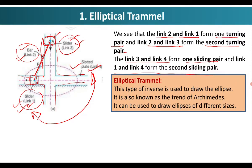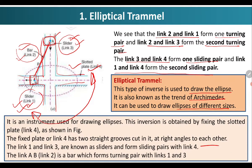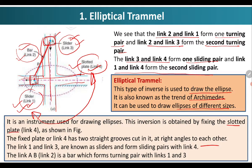The elliptical trammel is used to draw ellipses — this is its basic application. It is also known as the trammel of Archimedes and can be used to draw ellipses of different sizes. This inversion is obtained by fixing the slotted plate — link number four is fixed. The fixed plate has two straight grooves cut in it at right angles to each other. Link number one and link number three are the sliders and form sliding pairs with link number four, while link AB (link number two) is a bar which forms turning pairs with link numbers one and three.